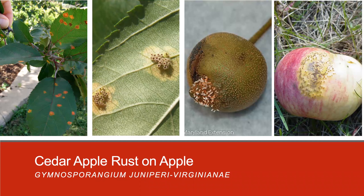Cedar apple rust is caused by Gymnosporangium juniperi-virginianae. On the leaves, pale yellow spots appear on the upper surface during May or June, and as the disease develops, the lesions turn orange and often have a reddish border. On the underside of the leaves, yellow spots develop, and during late spring and early summer, small orange-yellow tubular projections called aecia appear, as shown in the second image — this is the underside of an apple leaf with the yellow lesion and tube-like aecia structures.